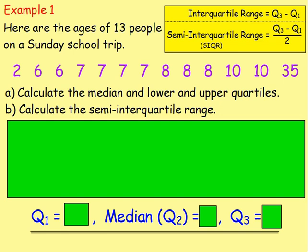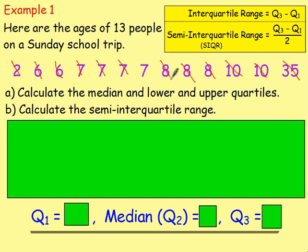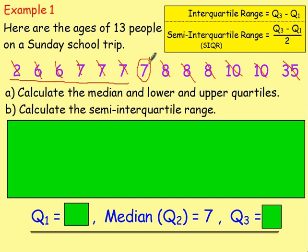Going back to the first example with the 13 people on the school trip — most people are between 6 and 10, but you've got the teacher and their child at 35 and 2 years old. To work out the median first: that is the middle number. Cross off one from the left and one from the right repeatedly, and you will find that 7 is in the middle — so the median is 7. We now want to find the median of the lower set, which will be Q1. Looking at the numbers below the median — the 2, 6, 6, 7, 7 and 7.